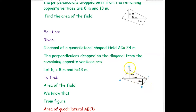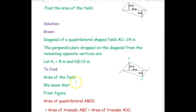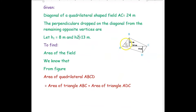The perpendiculars are dropped on the diagonal from the remaining opposite vertices B and D. The heights h1 and h2 are taken as 8 meters and 13 meters respectively. We want to find the area of the field. From the figure, the area of quadrilateral ABCD can be divided into two triangles, and the total area is the sum of the areas of those two triangles.